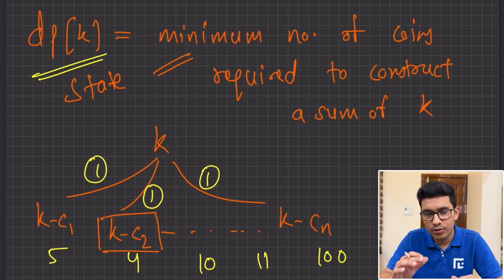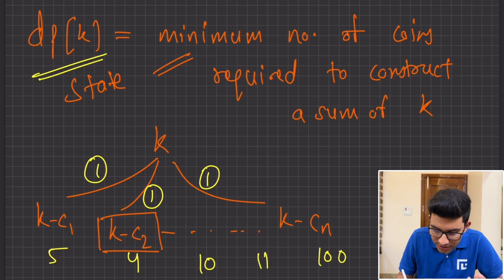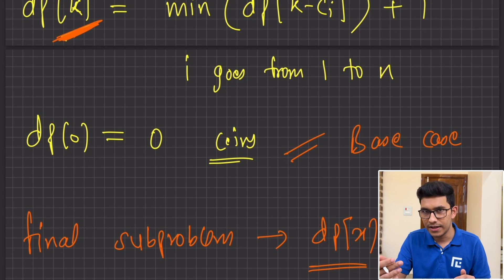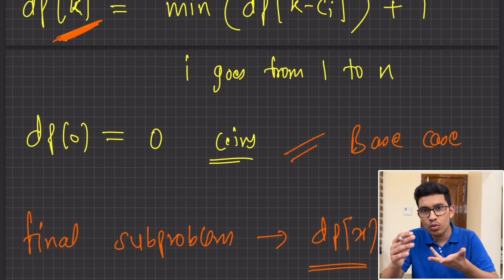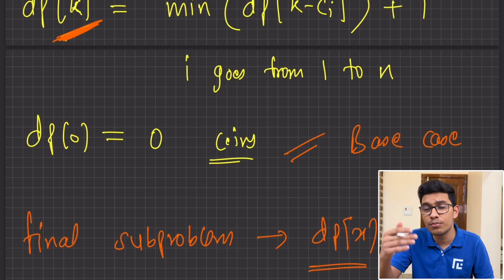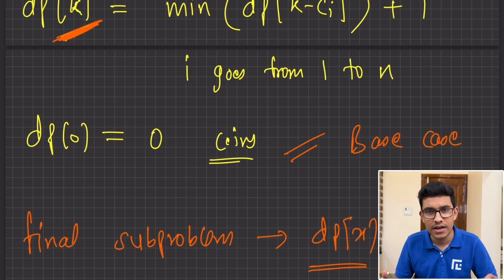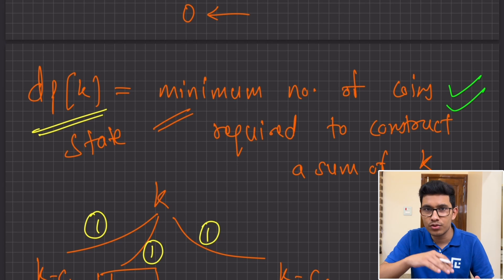One very important thing: there are many possible ways to define states, but it is critical to define the meaning of your state clearly. Once you define the meaning, the transition, the base case, and the final sub-problem follow automatically. In the dice combinations problem we had two different states that looked the same but had entirely different meanings, giving entirely different transitions. So whenever you're solving a DP problem, write down the meaning of your state to stay focused.